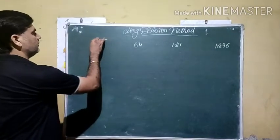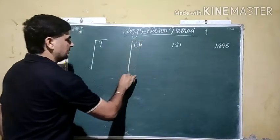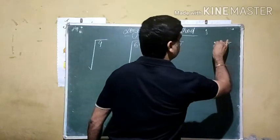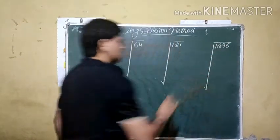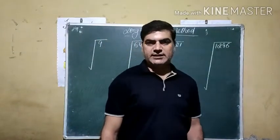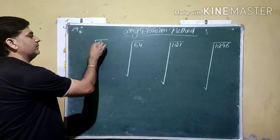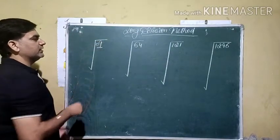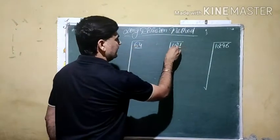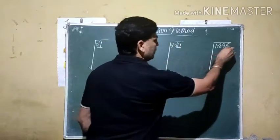This is the symbol of long division method to find out square root of the number. Now how can we apply it? In this case first of all because we are going to find out square root. Square means the perfect square of two numbers. So we are going to make pair from the right hand side. Because there is a single digit so we use here zero. We make pairs from the right hand side.